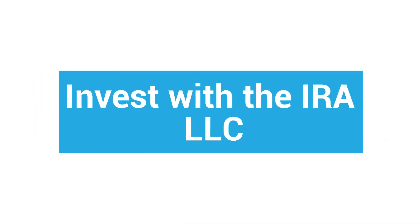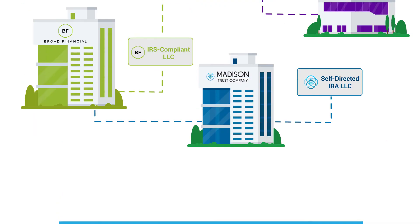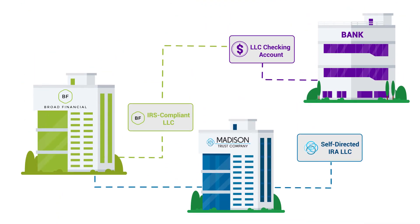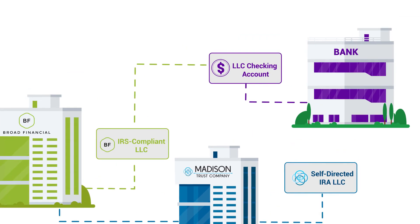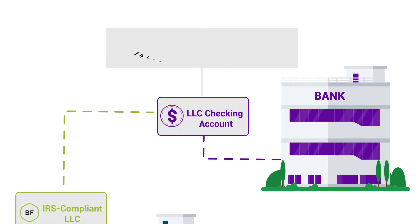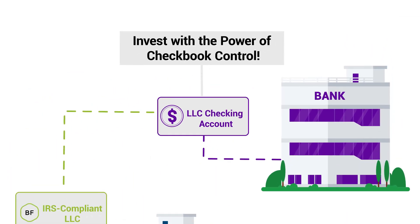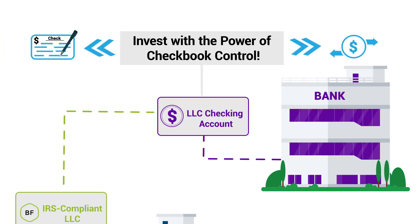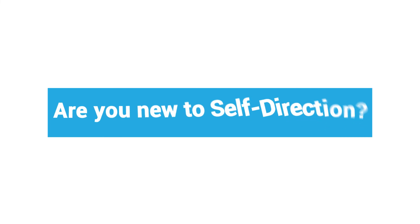Four: invest with the IRA LLC. This is the most exciting step, as you can now start investing with the power of checkbook control instantly. Simply write a check or send a wire to the investment of your choice.